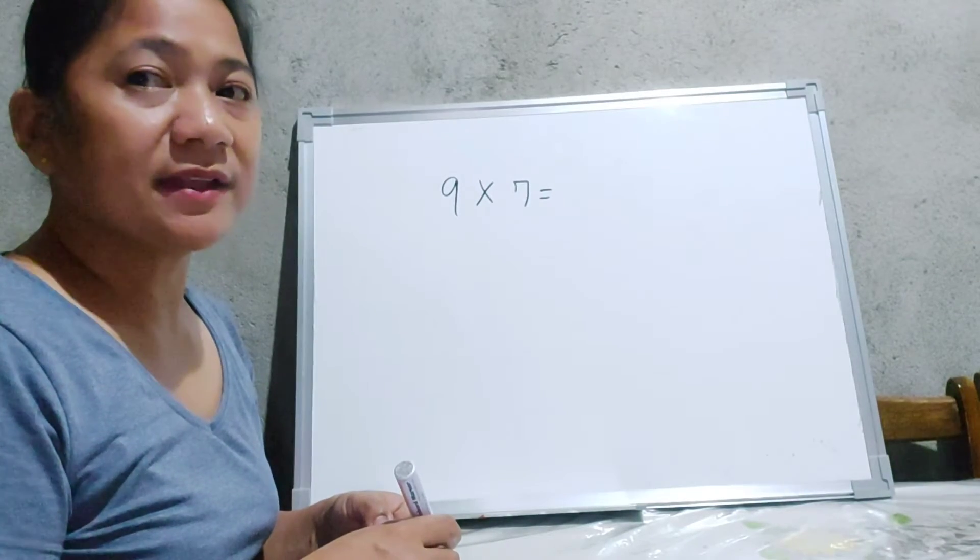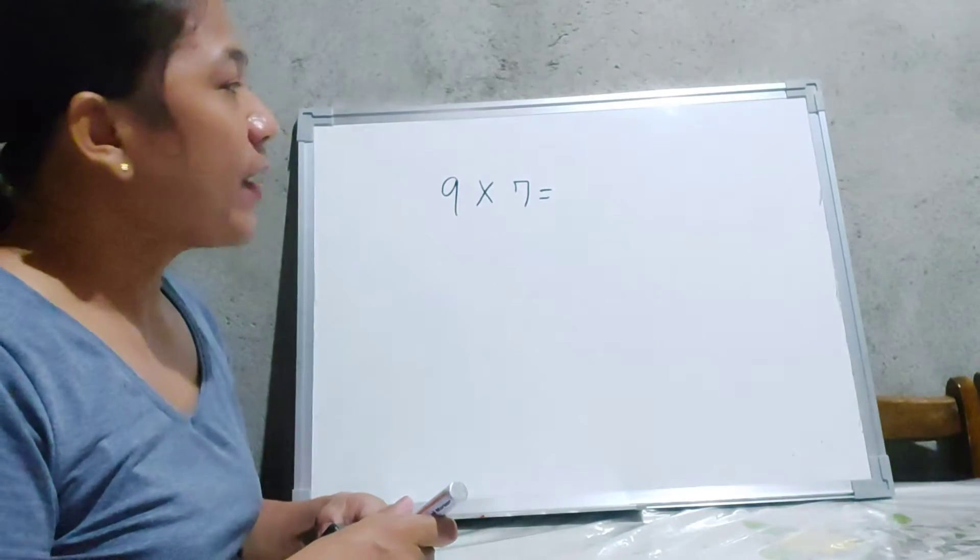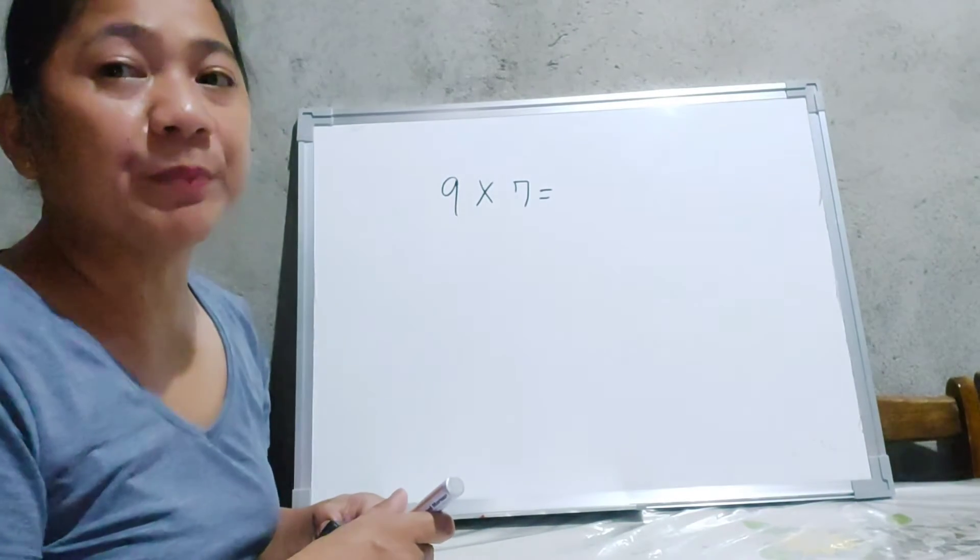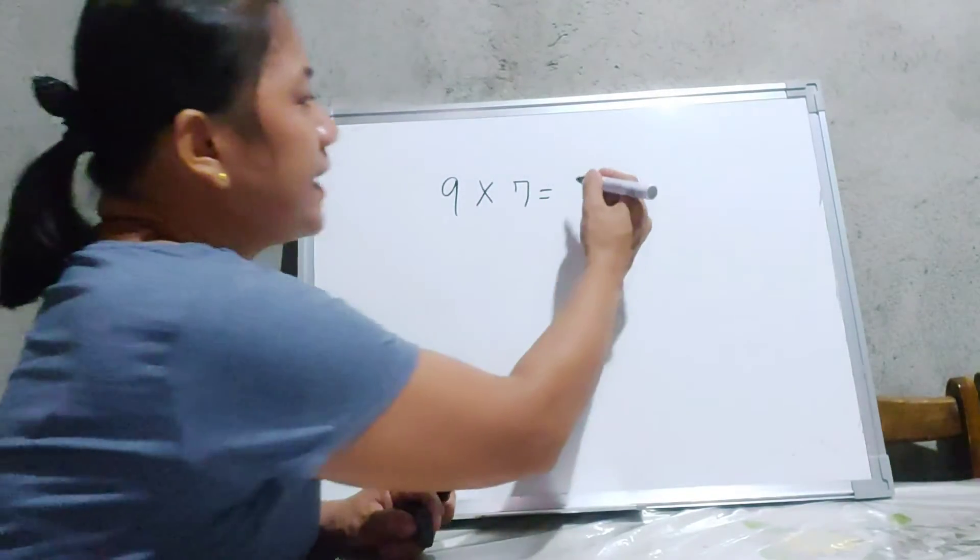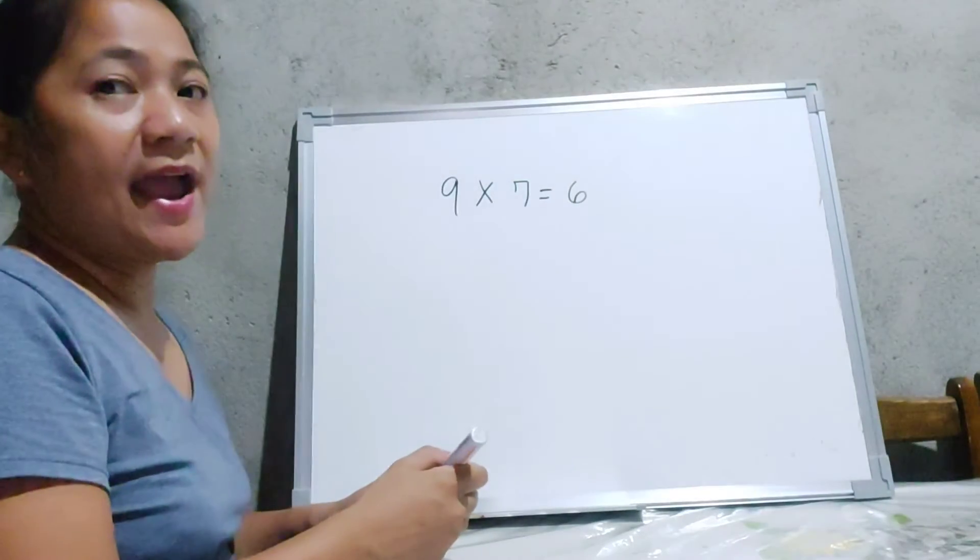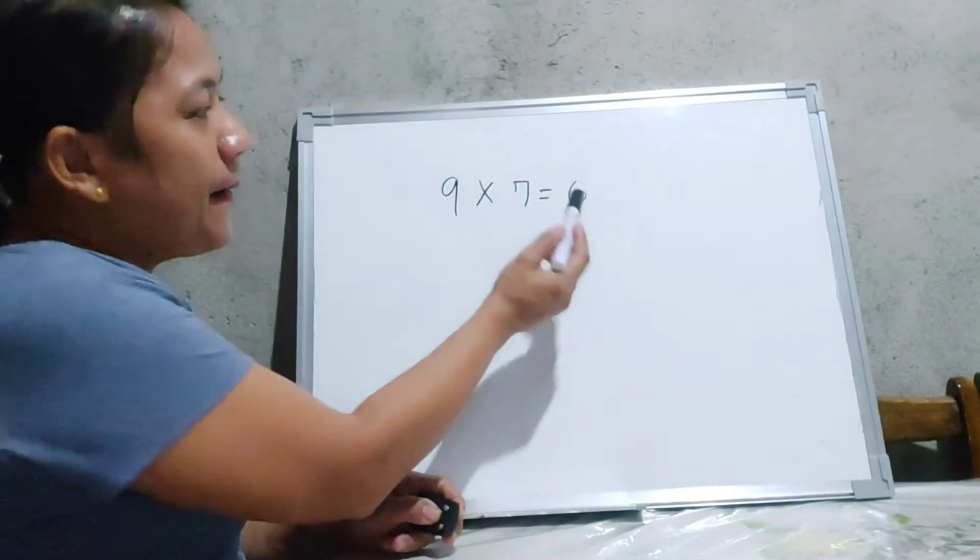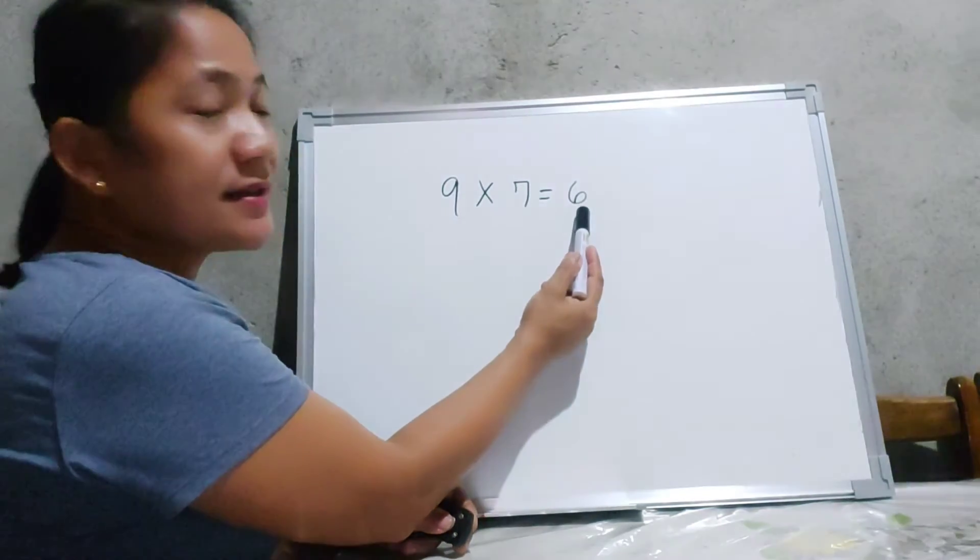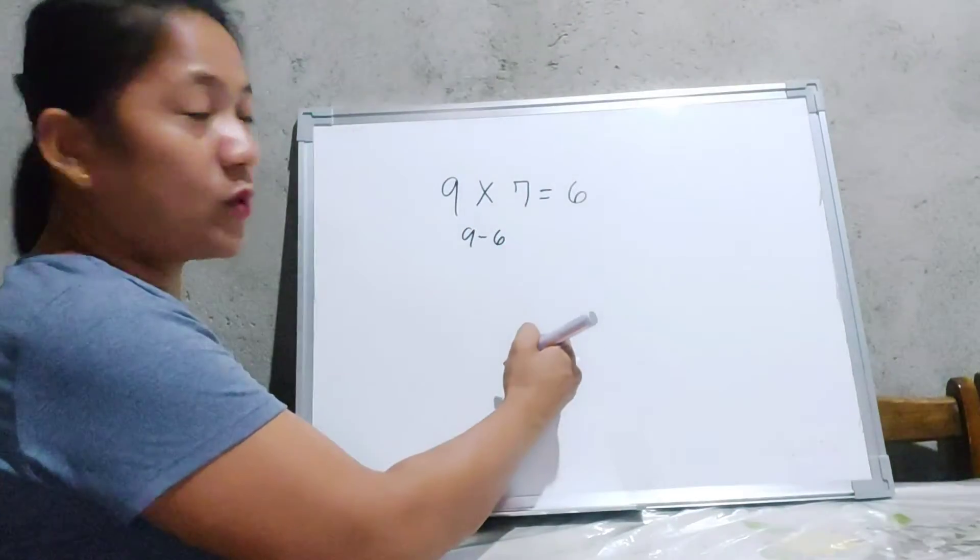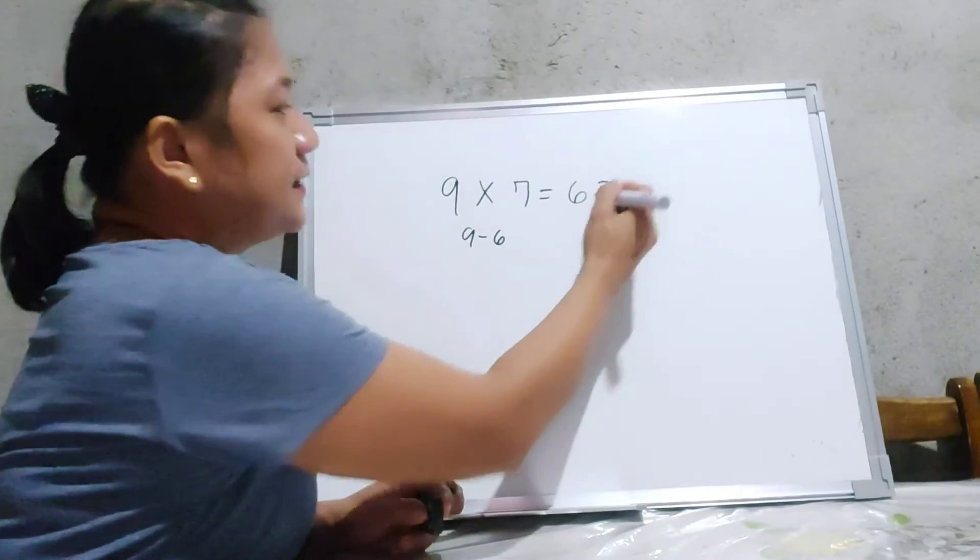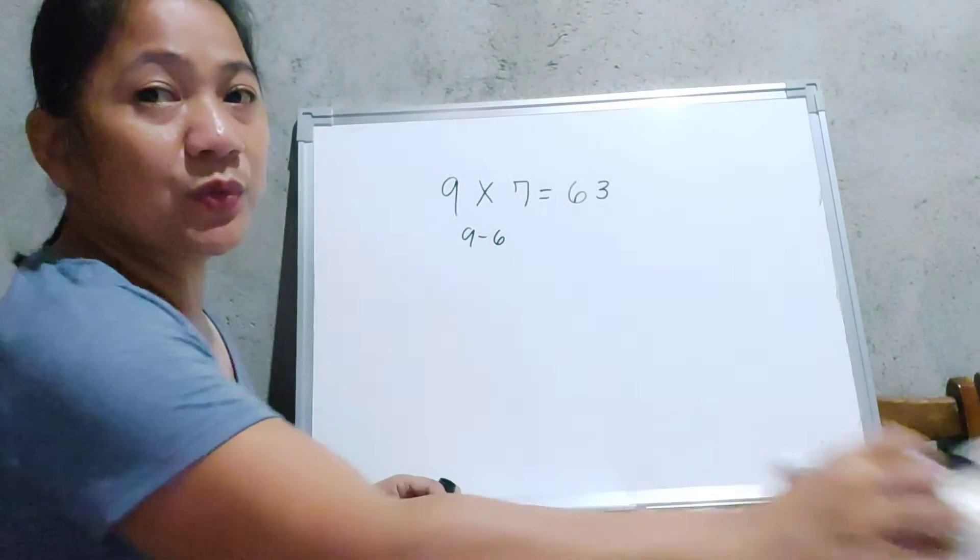So what is the number or the product of 9 times 7? All you have to do is to find the number that comes before 7. And that number is 6. So I will write 6 as the first digit of my answer. The second thing that you have to do is to subtract 6 into 9. So 9 minus 6 is equal to 3. Therefore, 9 times 7 is equal to 63.